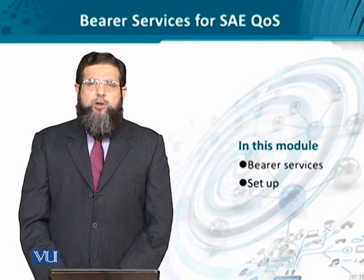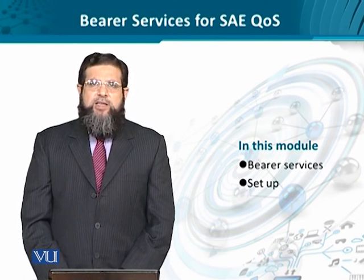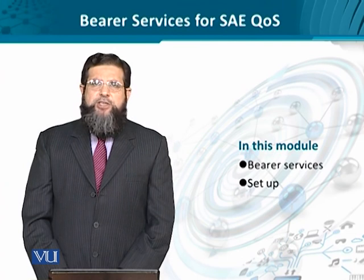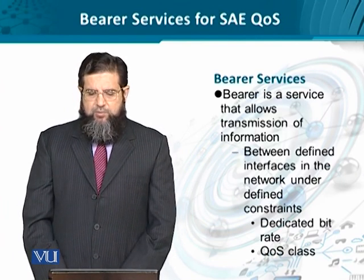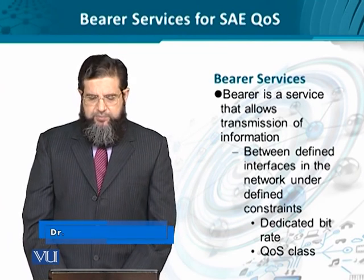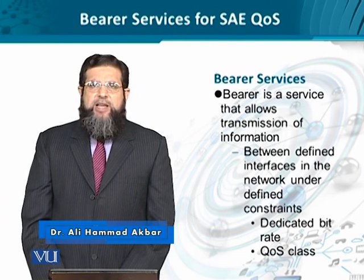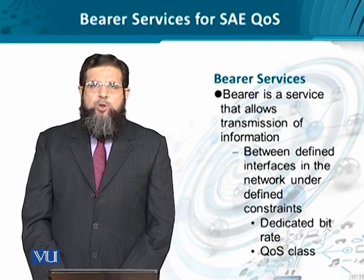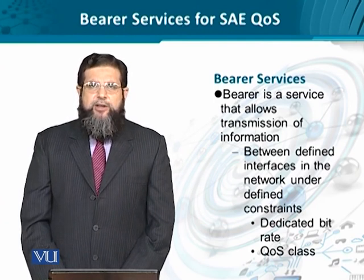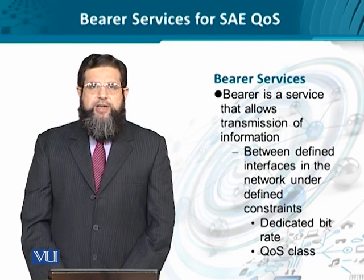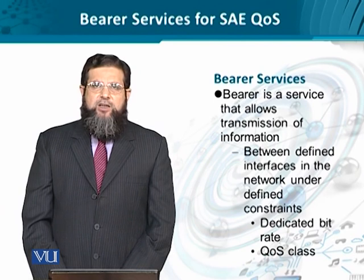We are going to look at the concept of quality of service with regards to how exactly the quality of service can be provisioned. For that, we have the concept of bearer. Bearer is essentially a service between different interfaces in the overall network architecture. Bearer allows a mechanism to exchange information between different network elements under certain constraints — that is, the exact requirements for bearer service are spelled out, and the bearer service is based on those requirements as constraints. These constraints include a definite bit rate requirement.